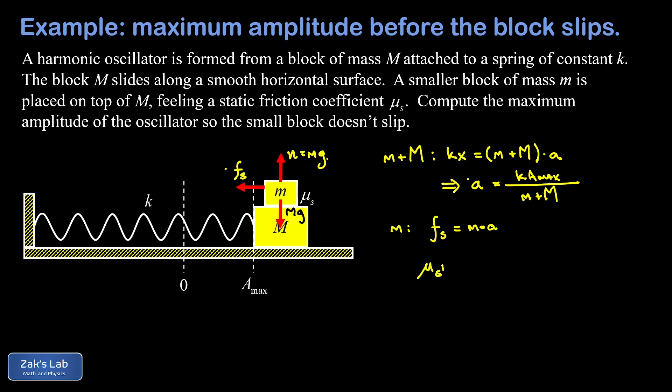It's equal to mu_s times the normal force, or mu_s*mg. On the right hand side we have our little m times the acceleration that we calculated in terms of A_max, so k*A_max over the sum of the two masses. The m's cancel out and what we're trying to do is solve for A_max.